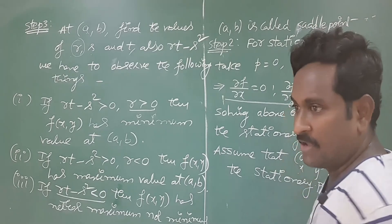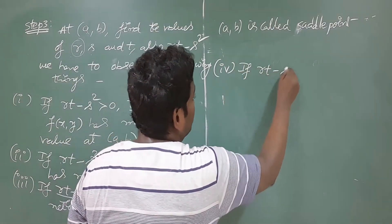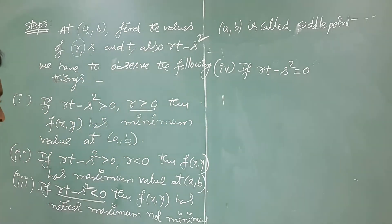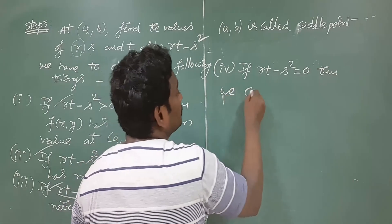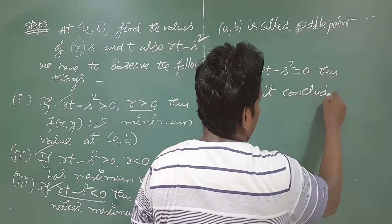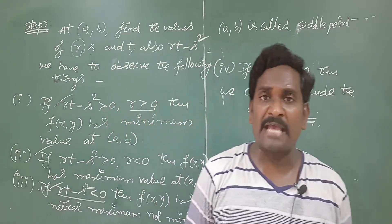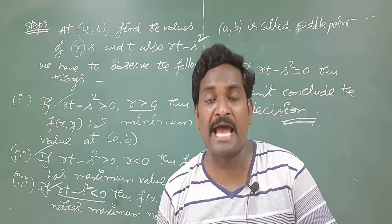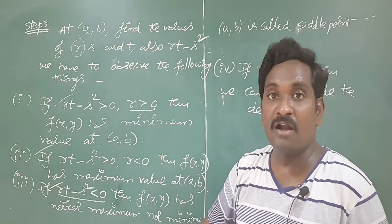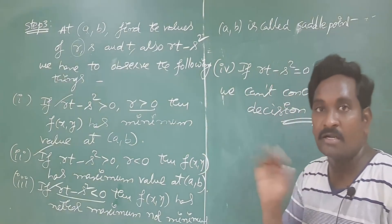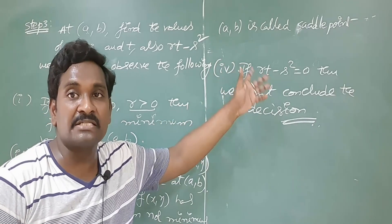There is one more case: sometimes RT − S² becomes zero. In that case we cannot conclude the decision — we cannot tell anything about whether the function has a maximum or minimum. Further investigation is required, and this investigation is not enough to conclude the result. Whenever RT − S² equals zero, we cannot determine the answer exactly, and we have to take another investigation. For engineering students, that further investigation is not typically required.